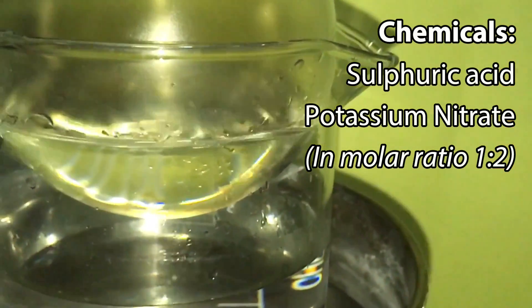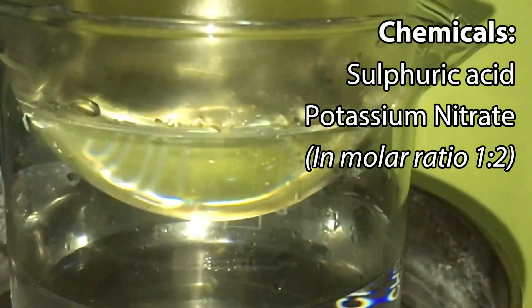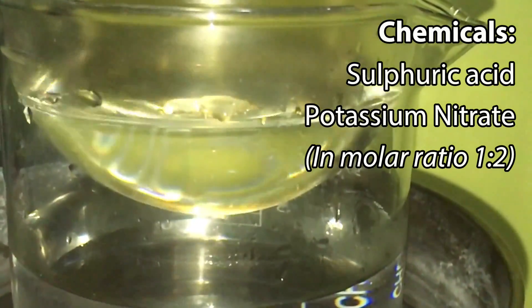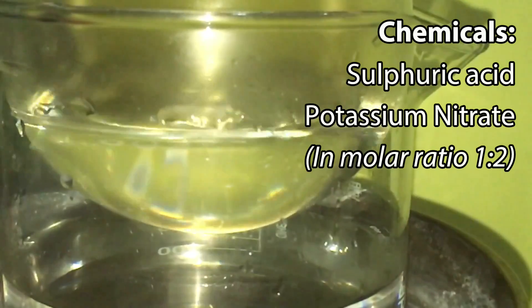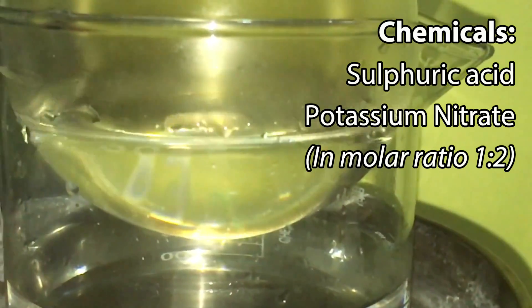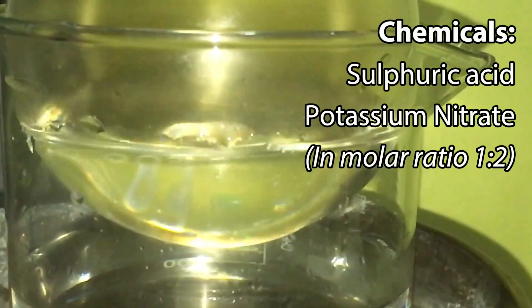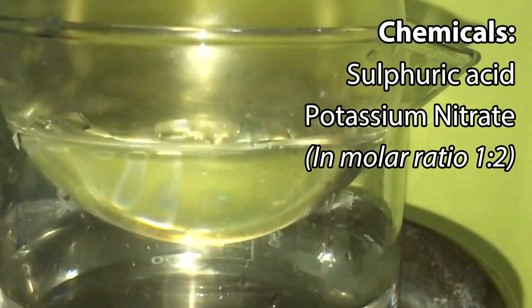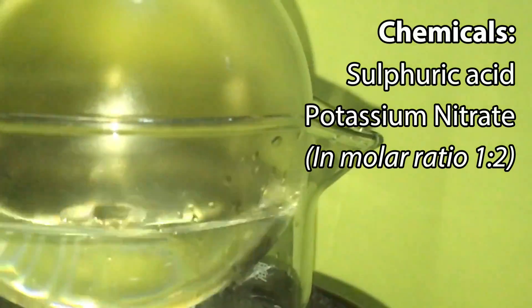So here are my ingredients: concentrated sulfuric acid and potassium nitrate. I'm using some sulfuric acid based drain cleaner so it is red and highly contaminated, but this should not affect the reaction. Basically, you can use any concentration of the sulfuric acid as long as you know the molarity of it. For every one mole of sulfuric acid, please use two moles of the nitrate.